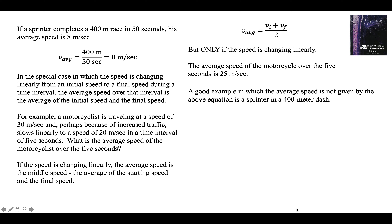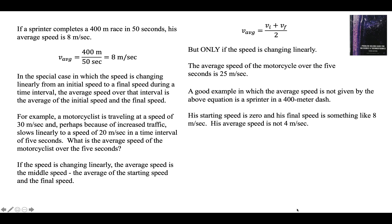A good example in which the average speed is not given by the above equation is that sprinter. If you use that equation, you say the sprinter starts from rest, which is zero, and maybe ends up at 8 meters per second. But the average speed is not 4 meters per second — the sprinter gets up to top speed very quickly.